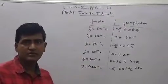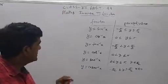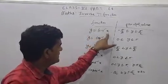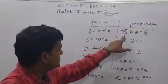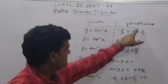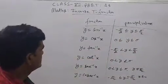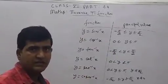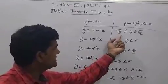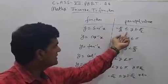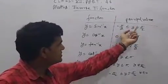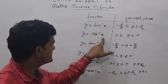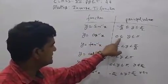First of all, we have to note down a few functions and their principal values. Like y equals sin inverse x — its principal value is minus pi by 2 less than or equal to y less than or equal to pi by 2. Means when we find the value of sin inverse x, the answer will lie between minus pi by 2 and pi by 2. And y equals cos inverse x — its principal value is 0 less than or equal to y less than or equal to pi.